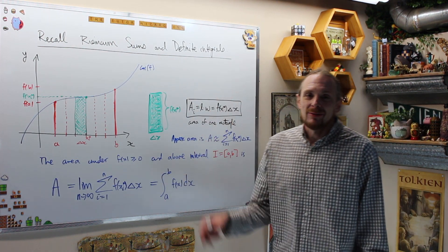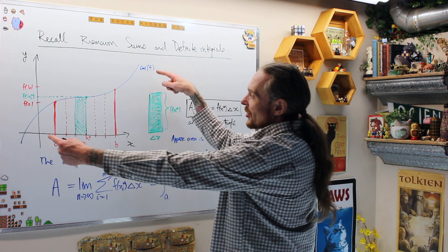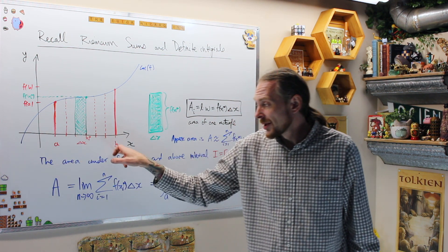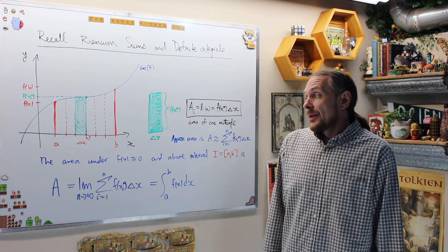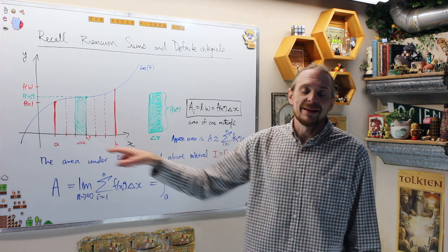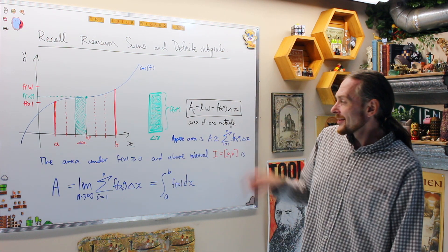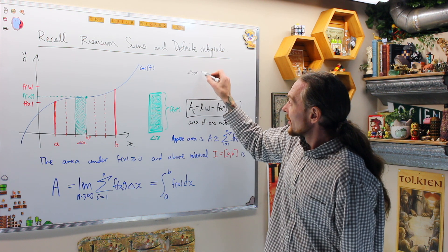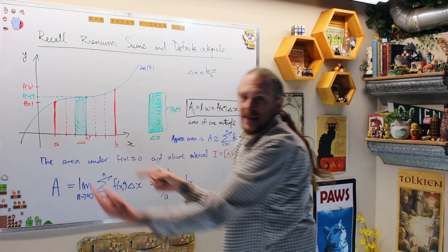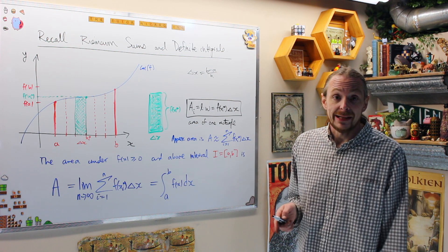Before we start double integrals, we're going to mimic this idea for a function of two variables. Riemann sums: we take a positive function, the graph of f of x. We take a closed interval [a, b], then we chop it up into a partition. We make the partition with equal widths — delta x is always b minus a over n. The length of the whole interval is b minus a, and we chop it into n equal pieces, so each piece has length delta x.